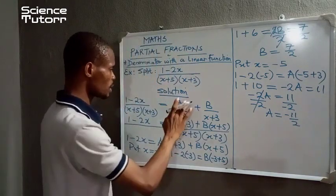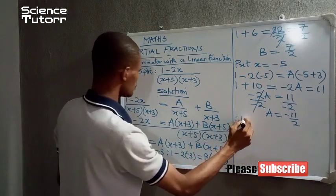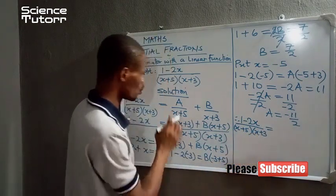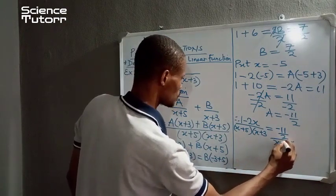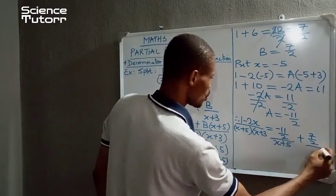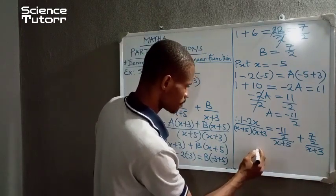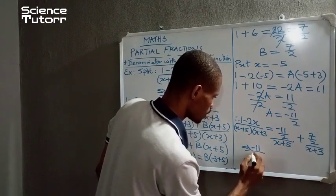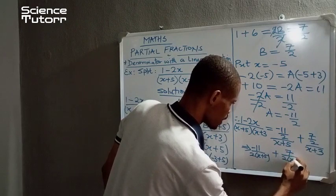At the end of the day, we have been able to obtain values of A and B. That is to tell us that the complex expression (1 minus 2x) divided by (x+5)(x+3) will be equal to A which is minus 11 over 2 all over (x+5) plus B which we have as 7 over 2, 7 over 2 all over (x+3). In other words, this 2 simply comes down to minus 11 all over 2(x+5) plus 7 all over 2(x+3).